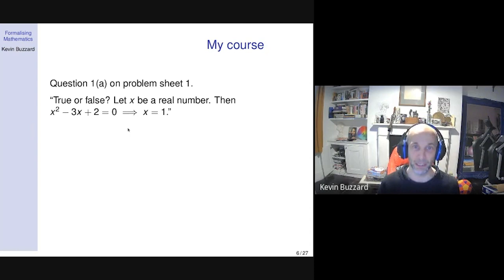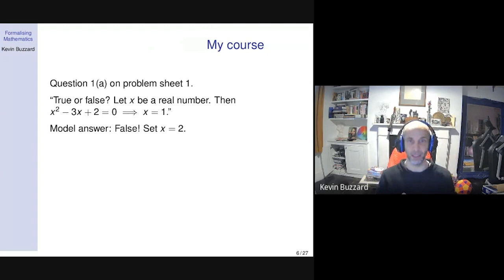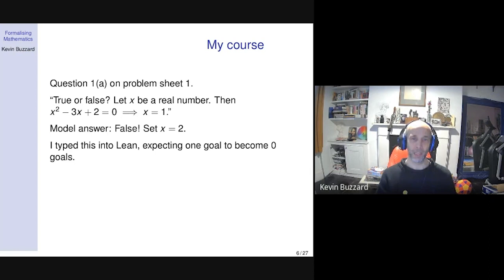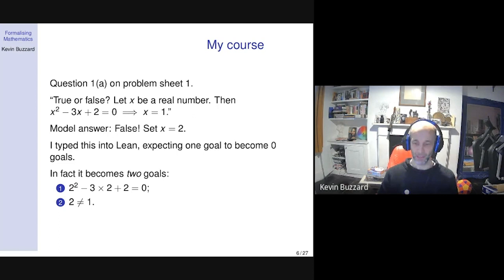Lean knows well what the implication symbol means, and it does have the real numbers. So I can formalize the statement. Of course, the answer is it's false — just let x be 2, because then the left-hand side doesn't imply the right-hand side. So I typed this into Lean. When formalizing things you have a goal you're working on, and after using enough tactics, that goal disappears and you get a message saying 'goals accomplished.' So I let x be 2, fully expecting one goal to become zero goals — and in fact, one goal became two goals.